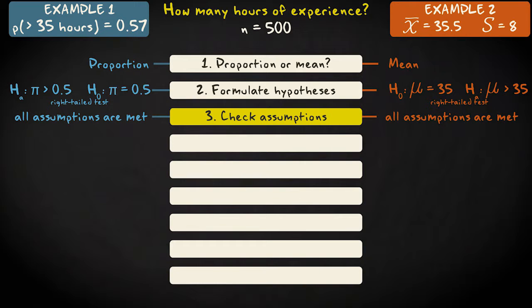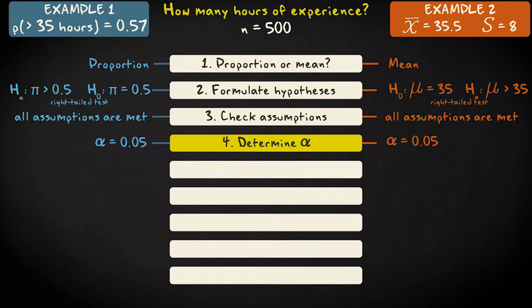Step 4: Determine your significance level alpha. The most common significance level is 0.05. Our test will be based on an alpha of 0.05.